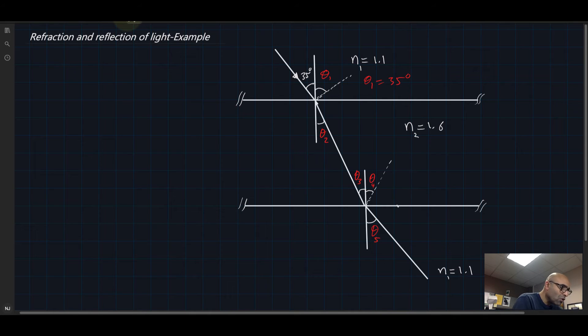To find theta 2, we need to employ Snell's law, which says that n1 sine theta 1 is equal to n2 sine theta 2. n1 is 1.1 times sine of the incident angle, which is 35 degrees, is equal to n2, which is 1.6, times sine theta 2. All right, now solving for theta 2.